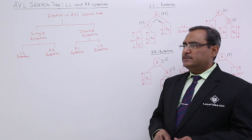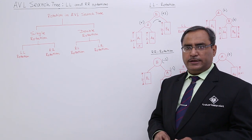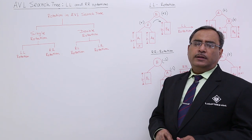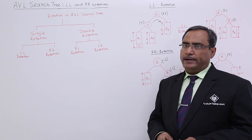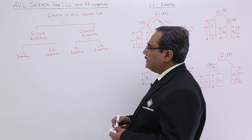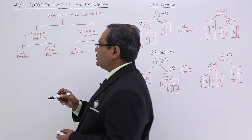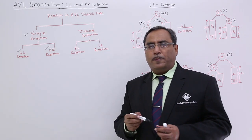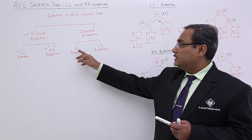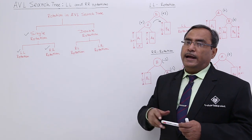L stands for left and R stands for right. So left-left, right-right, left-right and right-left. In this session, we are going to discuss single rotations — that means LL and RR rotations with proper examples. In the next video, we shall discuss double rotations for RL and LR.